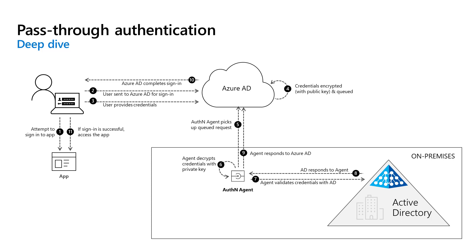When a user tries to sign into an application that's behind Azure Active Directory — maybe it's a third-party app, maybe it's an on-premises app, maybe it's Office 365 — and pass-through authentication is enabled on the tenant, the following occurs. Let's take Outlook Web App as an example. If the user is not already signed in, the user is redirected to the Azure Active Directory sign-in page. The user enters their username and password, clicks Next, and then clicks Sign In.